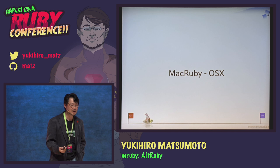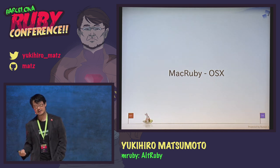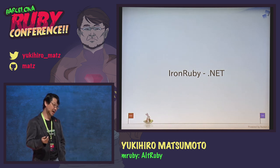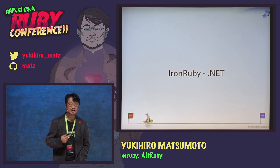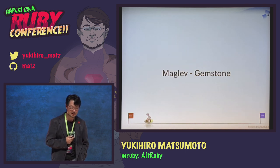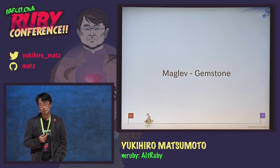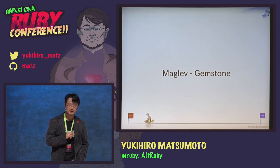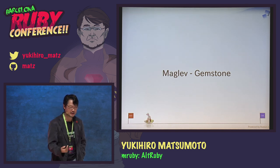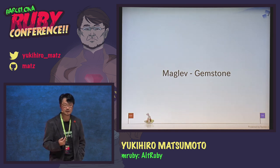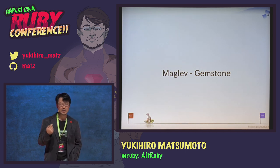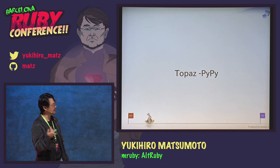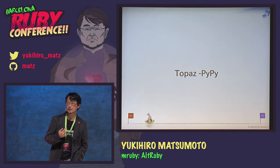RubyMotion is based on MacRuby, which runs on top of OS X. We have IronRuby, which is on top of .NET from Microsoft. We had Maglev, a Ruby implementation on top of the GemStone Smalltalk virtual machine — it ran quite fast. And there are newcomers like Topaz, which is on top of PyPy, a JIT language virtual machine platform primarily targeting Python.